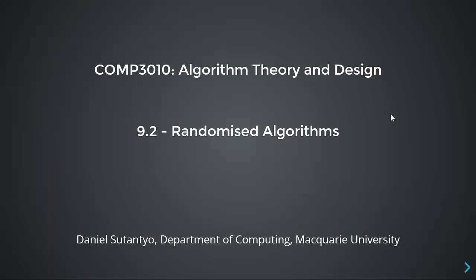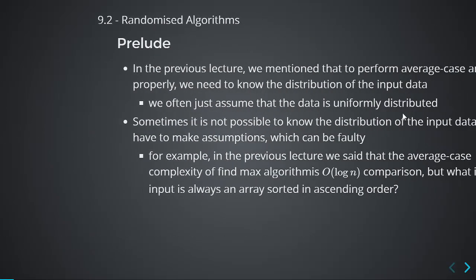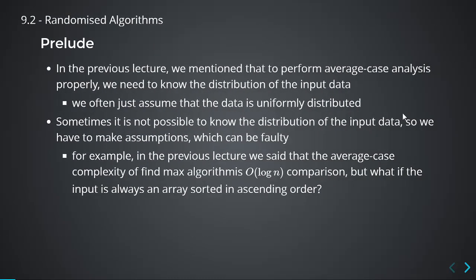In the last lecture, we went through probabilistic analysis of an algorithm to get the average case complexity. I mentioned that it is not an easy thing because you have to assume the distribution of the input data, and sometimes you just don't know this. We assumed that the distribution is uniform in the last lecture, so every event has an equal chance of happening. And that's pretty much already the simplest we can make it.